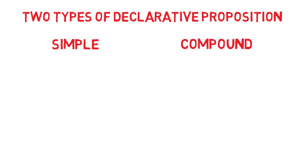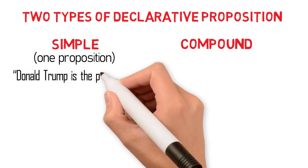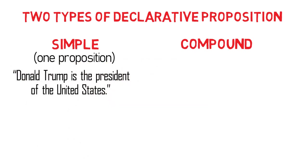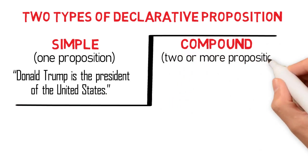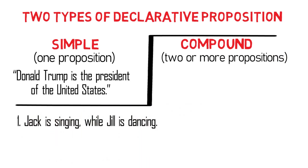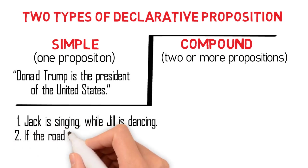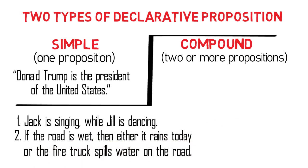On the one hand, a simple proposition is one that is composed of only one proposition. For example, 'Donald Trump is the president of the United States' — this proposition has only one component. On the other hand, a compound proposition is composed of two or more propositions, such as 'Jack is singing while Jill is dancing,' or 'If the road is wet, then either it rains today or the fire truck spills water on the road.' The first example is made up of two propositions, namely 'Jack is singing' and 'Jill is dancing.'